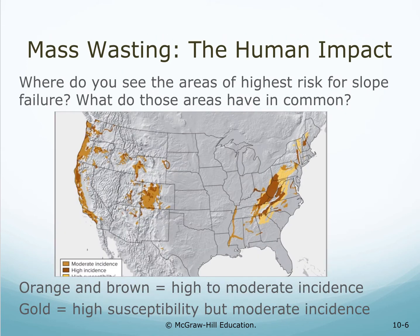There is an area on I-40 in North Carolina and Tennessee that actually experiences frequent rock slides. When it does happen, it usually closes parts of the interstate for days, weeks, or sometimes only hours. Where do you see the areas of highest risk for slope failure? What do these areas have in common?